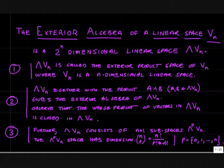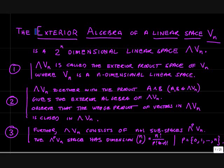Today we're going to talk about the famous exterior algebra of a linear space Vn, where n is the dimension of the linear space. The reason it's called exterior is because we're going to use the vectors in Vn to construct objects — exterior products — which do not belong to the space Vn, so they're exterior to the space.